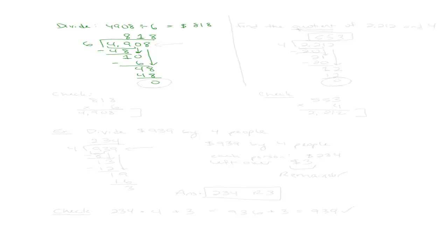Now, if it's been a while since you've done this, or if you learned division in a different country, this might look a little different. But it's worth learning so you can follow along in class. Let's try another one — let's find the quotient of 2,212 and 4. That keyword quotient should ring a bell: it means division. So I'm going to divide 2,212 by 4.